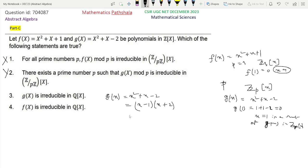So g(x) is expressed as the product of two non-unit elements. So it is not irreducible in Q[x]. So option 3 is not the correct option.